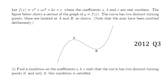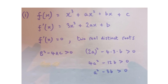Question 3 from 2012 concerns the cubic f(x) = x³ + ax² + bx + c. Part 1: find a condition on a and b for two distinct turning points. Differentiating gives a quadratic, and for two distinct stationary points we need a positive discriminant. With coefficients 3, 2a, and b, the condition is a² − 3b > 0.